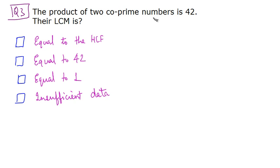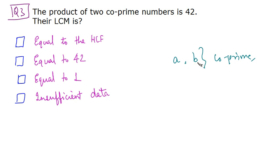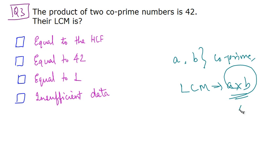Let's move on to question number 3. You have been given the product of two co-prime numbers and asked for the LCM. If two numbers A and B are co-prime — meaning they share no common factors other than 1 — then their LCM is simply their product. In this case, the product is already given as 42, so the LCM is 42. Hence our answer is option B.